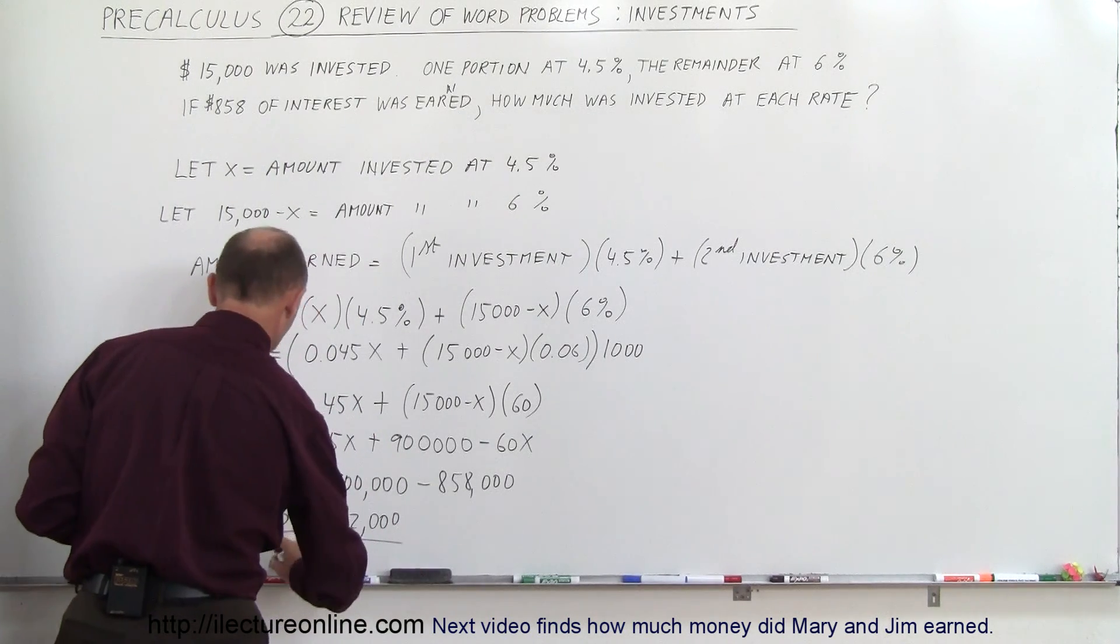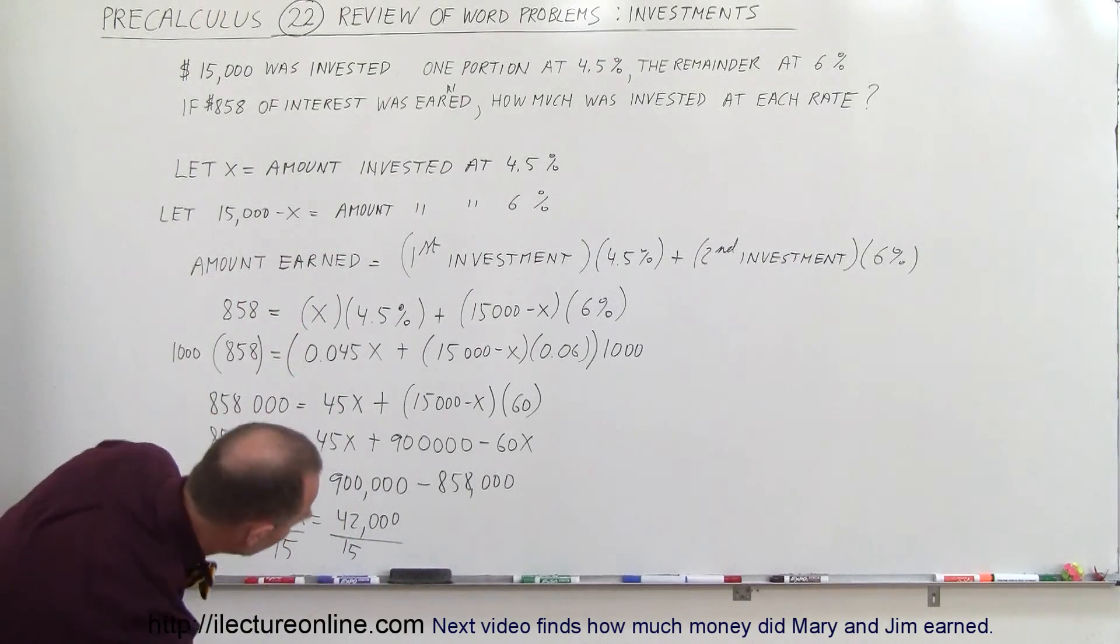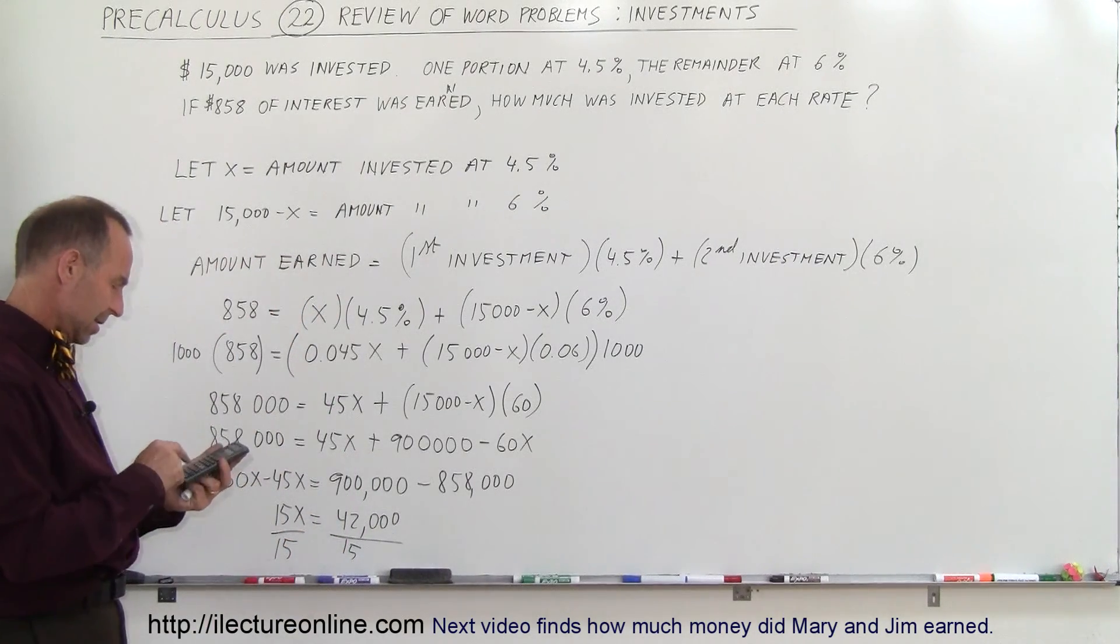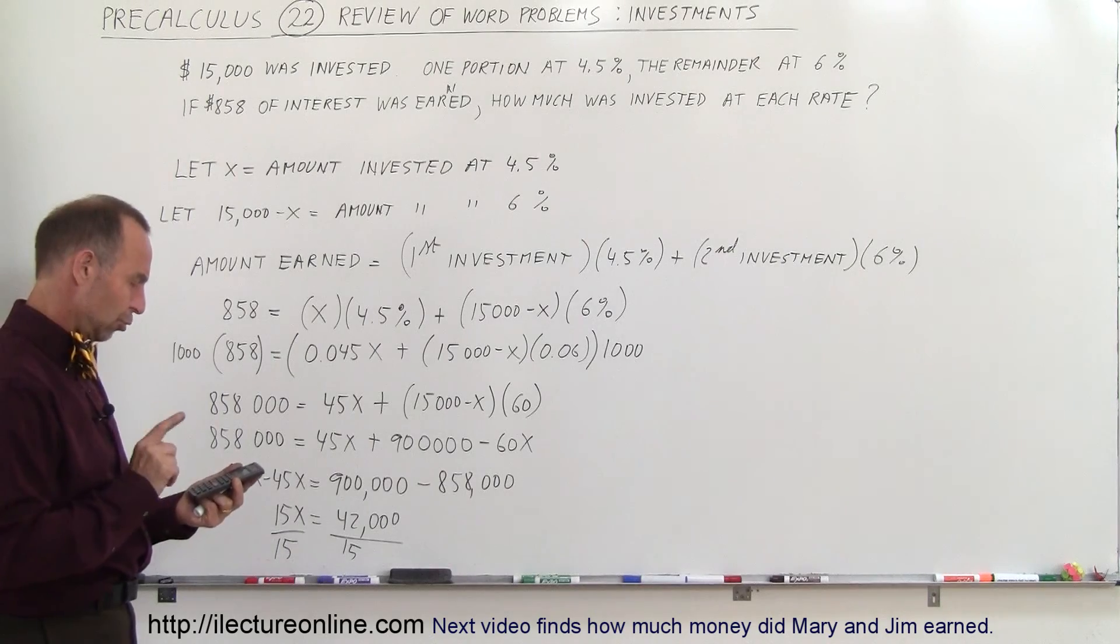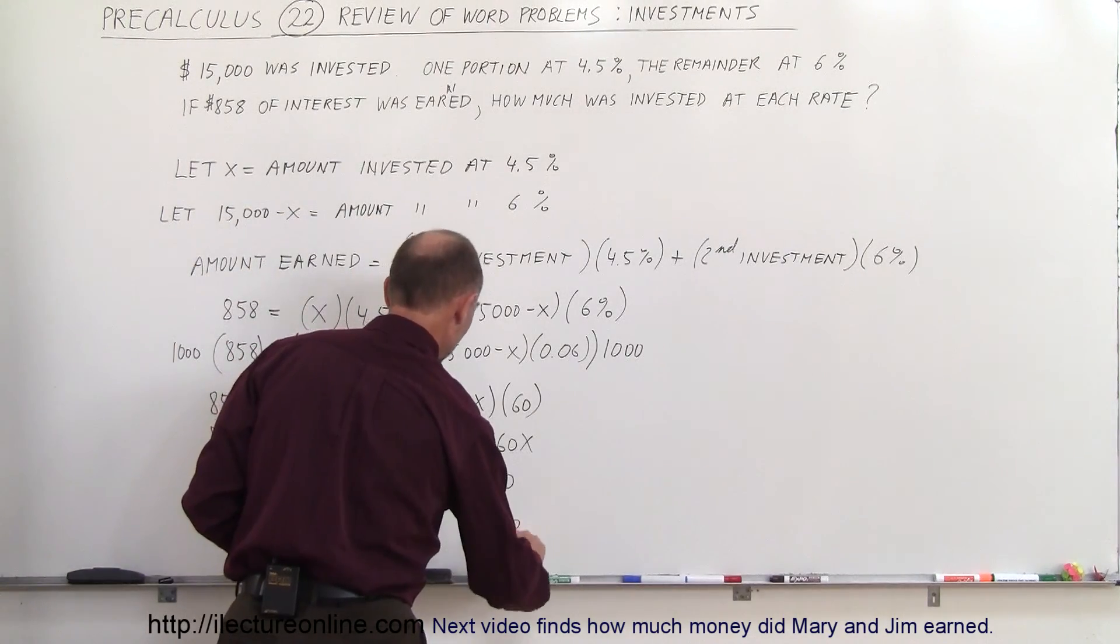Divide both sides by the coefficient in front of x. And let's see here, 42,000 divided by 15, 2,800. So it gives us x is equal to 2,800.